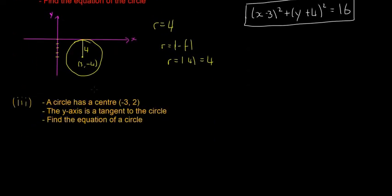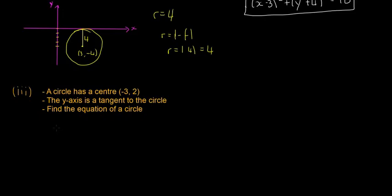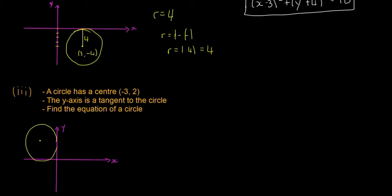The last question: a circle has a center of (-3, 2). The y-axis is a tangent to the circle, and it asks us to find the equation of the circle. Again, we're going to draw a quick sketch. The x value is going to be minus 3 and the y value is going to be 2, so the circle is somewhere over in the second quadrant, tangent to the y-axis. So minus 3 and 2 is the center.